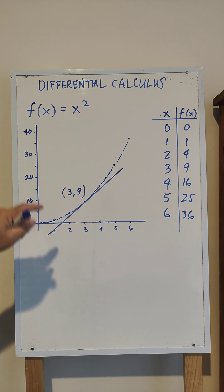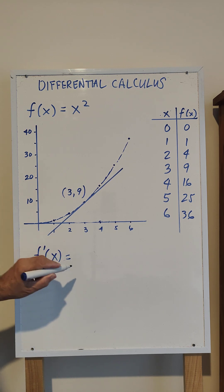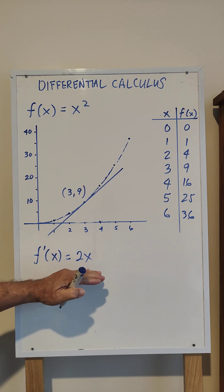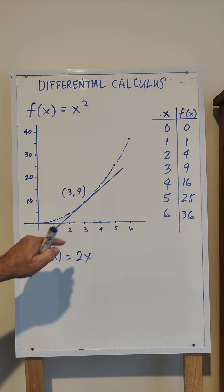To get the slope formula of this curve, we need to get the derivative using the power rule. The derivative of x² is equal to 2x, so this is your general formula for the slope of the curve.